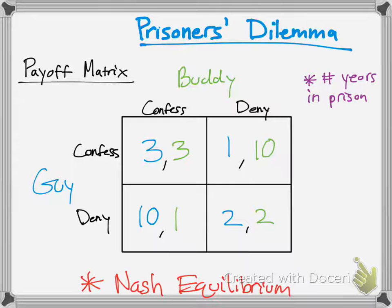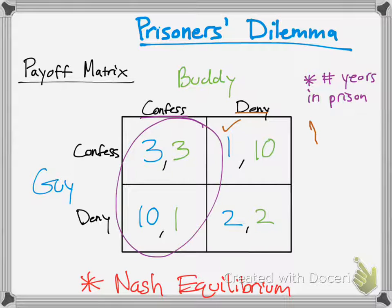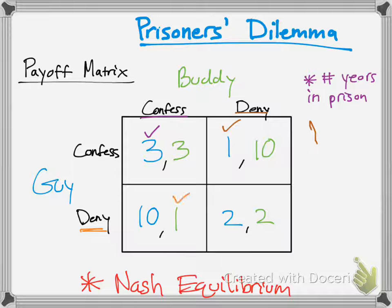Let's think about this. Say Buddy denies — if Buddy denies, then Guy is going to want to confess because he will spend the least amount of years in prison. Looking at that column, it's one versus two years, and one is the better option. Now what if Buddy confesses? Guy either has three years or ten years, so he obviously wants to confess as well. What if Guy denies and we're Buddy now? You're going to want one year in prison instead of two.